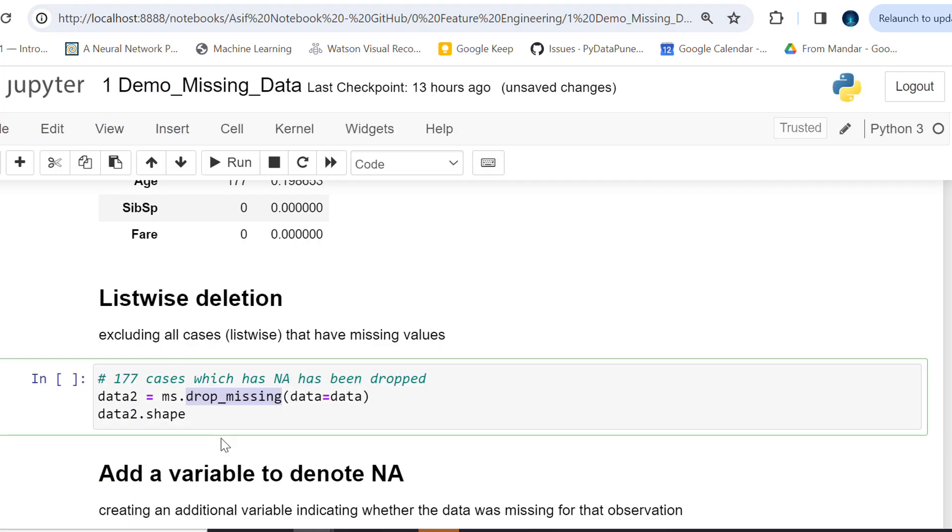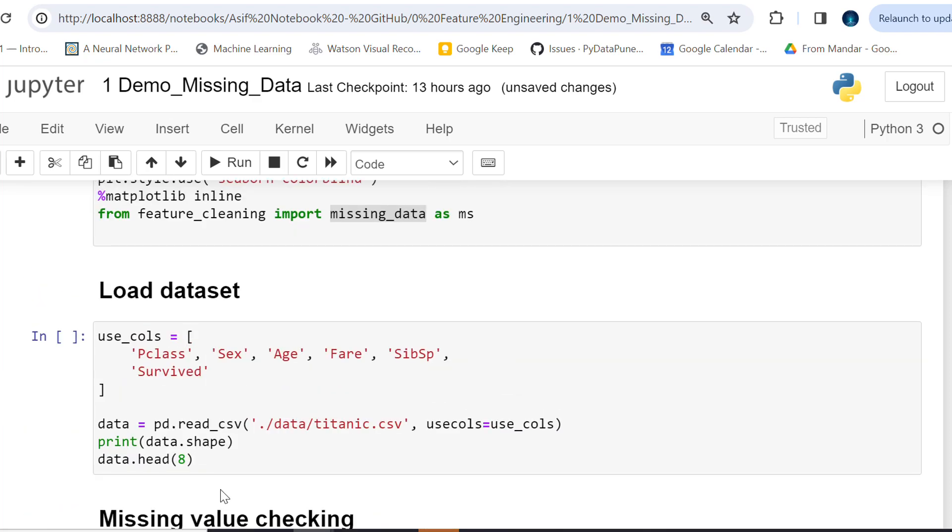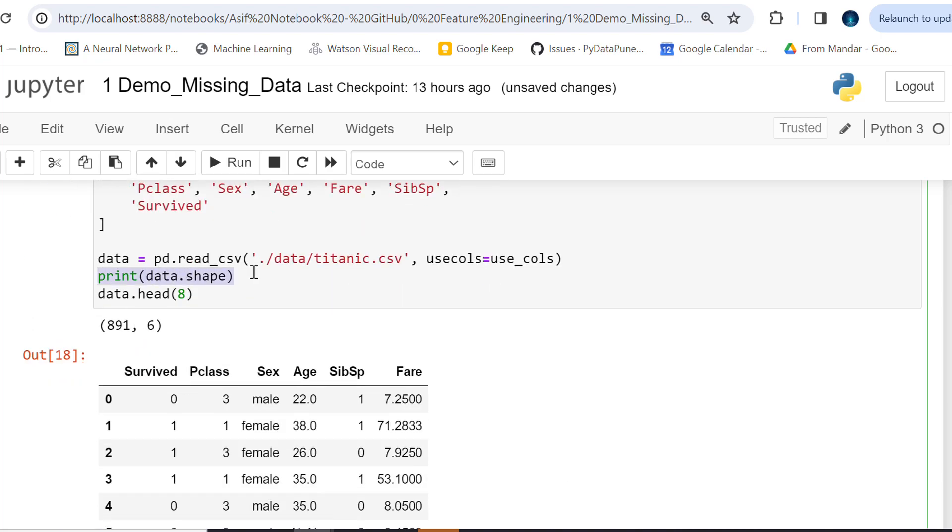Let me see the shape now. So I have 714 rows now—that means I have 714 rows now and 6 columns. Let me see initially, before dropping, how many rows we had. For that I think we executed this. Let me see.